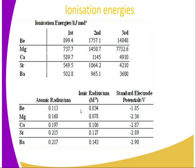Ionization energy refers to the minimum energy required to remove an electron from the outermost energy level. Since they have two electrons in the outermost energy level, they can lose one or two electrons to attain stability. If we go to the third energy level, a lot of energy will be required. Down the group, the first ionization energy decreases, and the second ionization energy also decreases. But the first ionization energy is less than the second ionization energy.